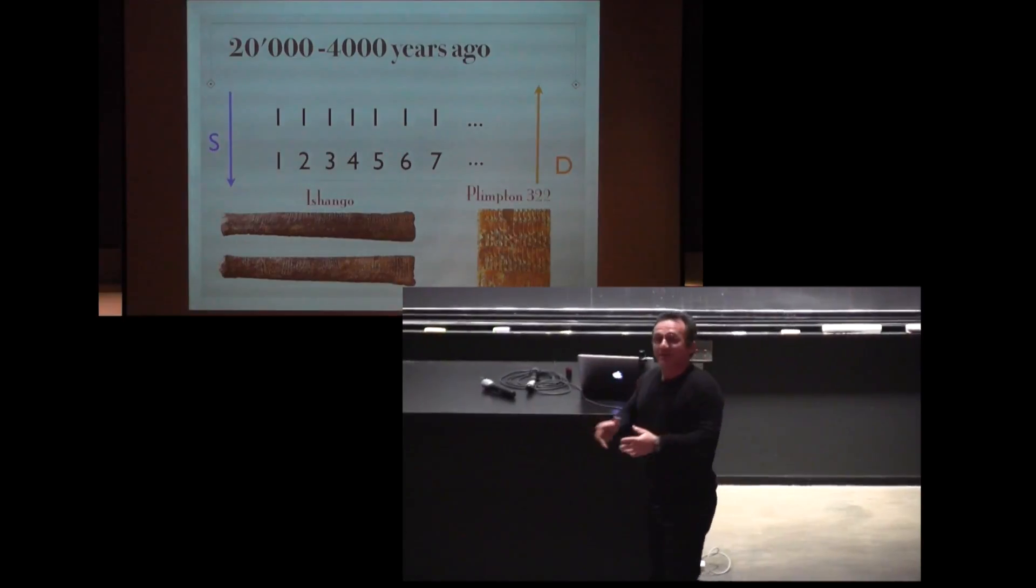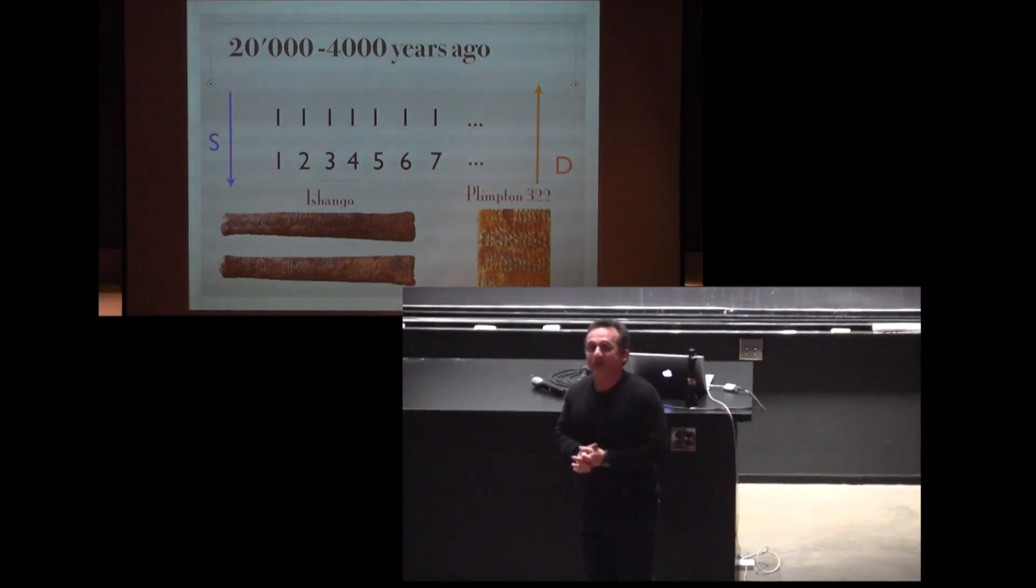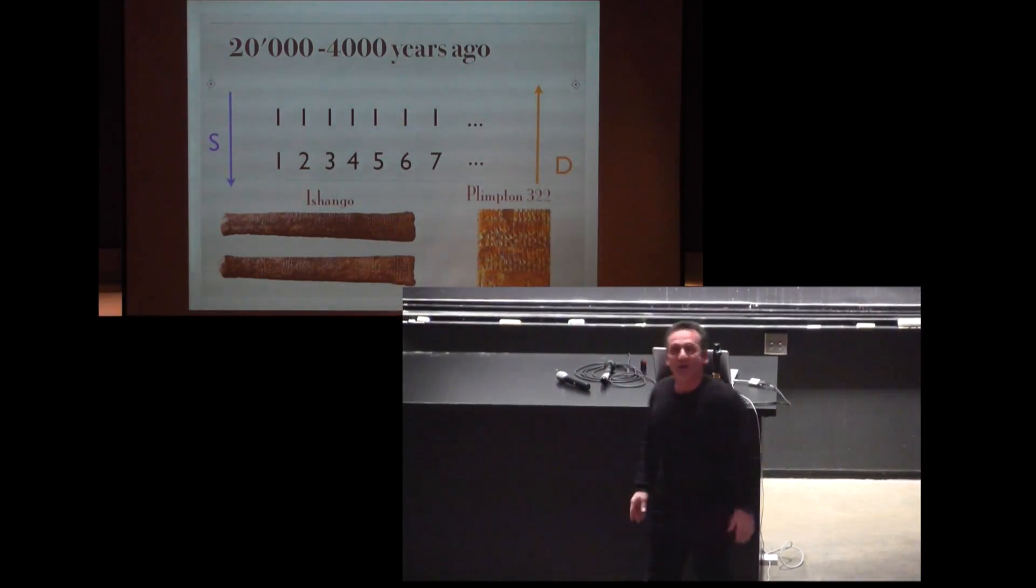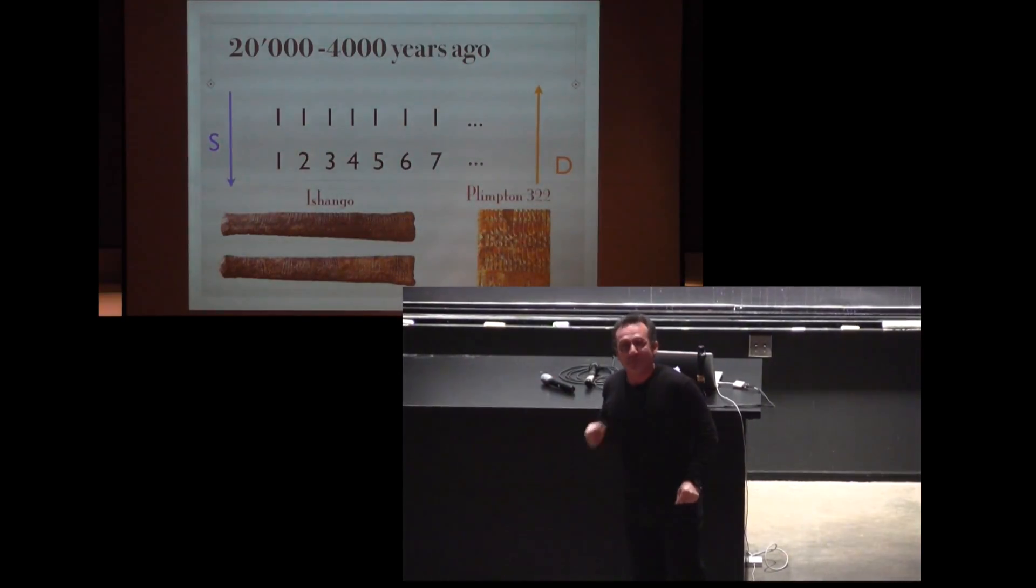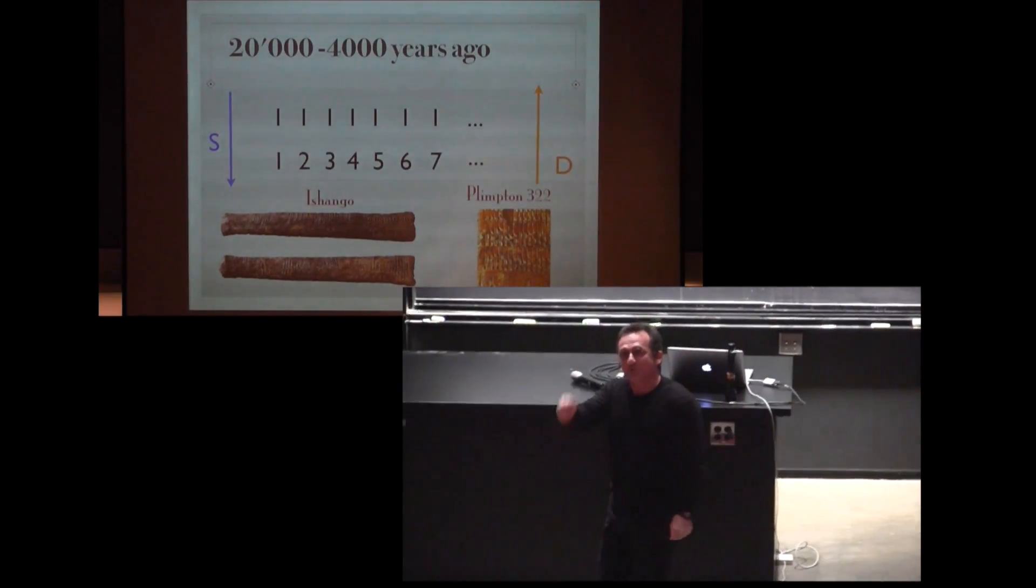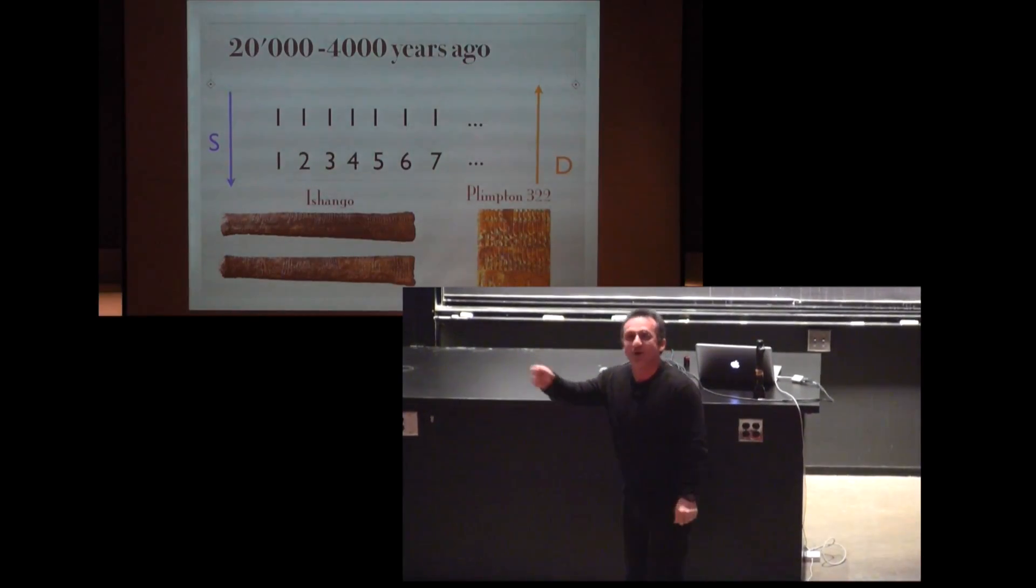We are going back 20,000 years ago when mathematicians were writing on bones, like the Ishango bone, and I want you to think about these marks as a function, as a constant function 1, 1, 1, 1, 1, 1.